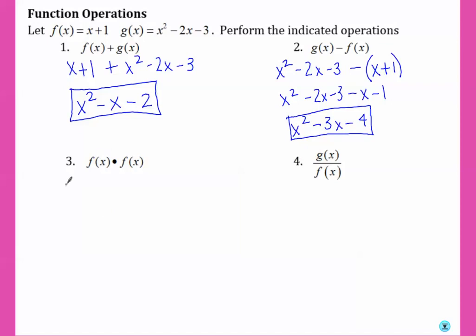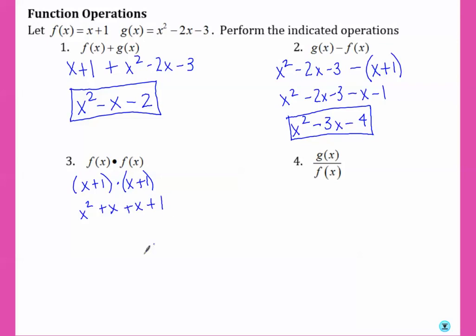Number three asks us to multiply f of x times f of x. You should remember from previous units that when we have two things being multiplied together, we need to FOIL it out. So we get x squared plus x plus x plus 1, and then combine like terms.